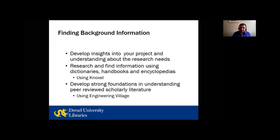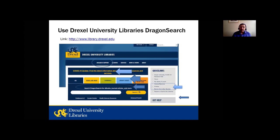For understanding subjects, you'll need background information for a better understanding of the subject. It could be interdisciplinary in nature — students from different disciplines often work together on a project. For example, a biomedical engineering student could be working with an electrical engineering student, or even across physics and chemistry. Variety of online sources are available through our library guides, including handbooks, electronic books, encyclopedias, and journal articles. We're going to use Novel as an example to find that information, and also build a strong foundation in peer-reviewed scholarly literature using Engineering Village.